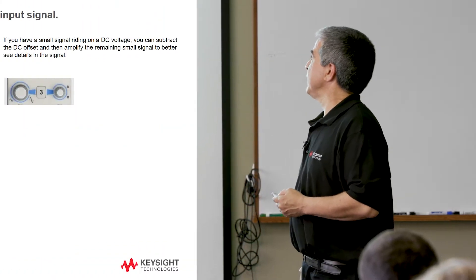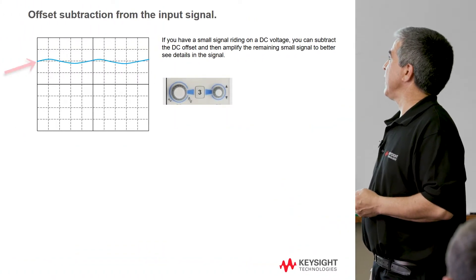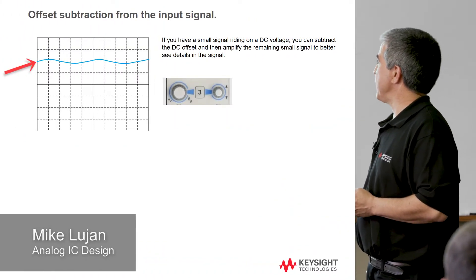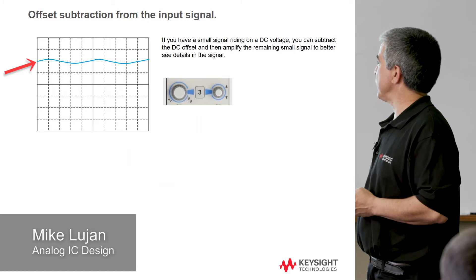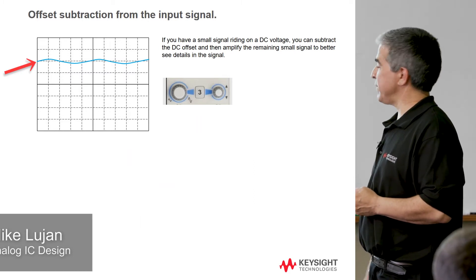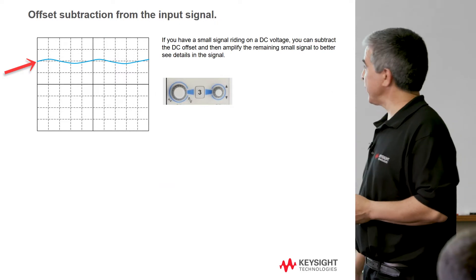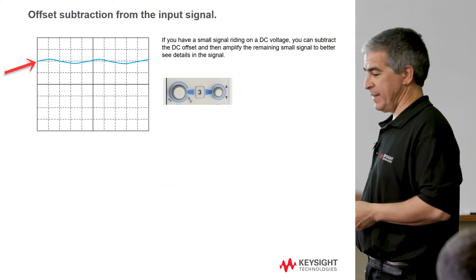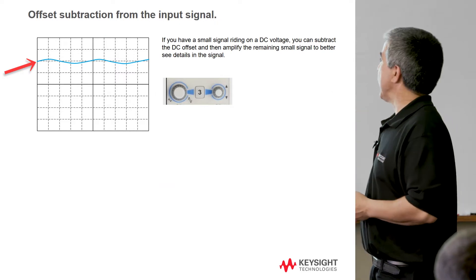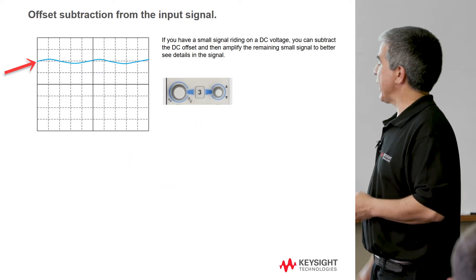So like I said before, if you have a sine wave that has got a DC voltage riding on it, maybe in this particular case, if this is a one volt per division, there's two volts of DC and a pretty teeny tiny sine wave on there, you're really not interested in the DC. You're more interested in what the sine wave looks like.